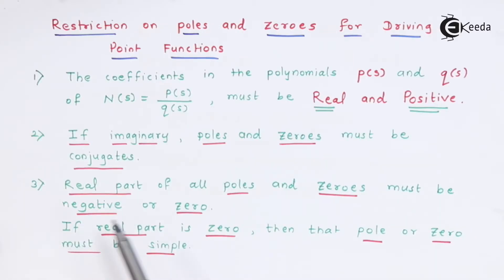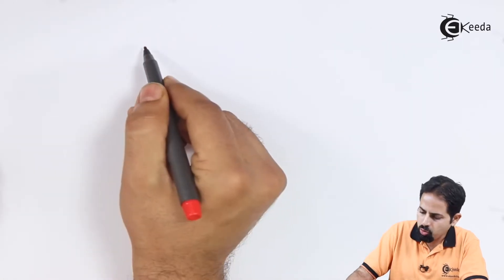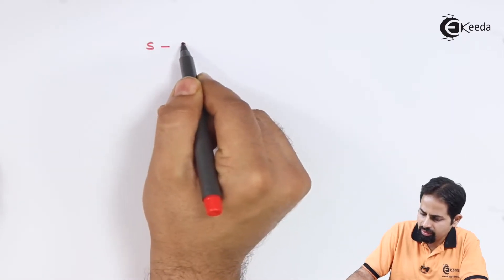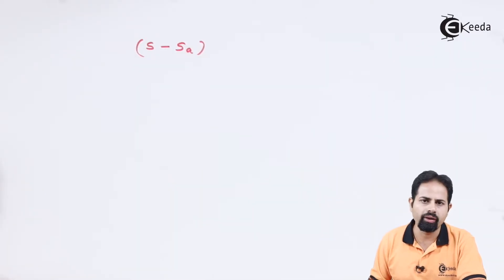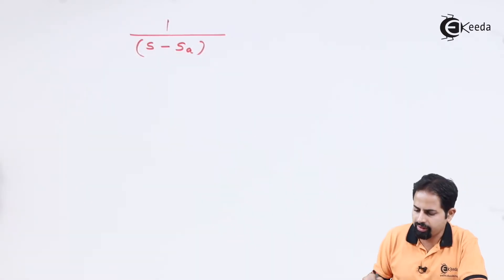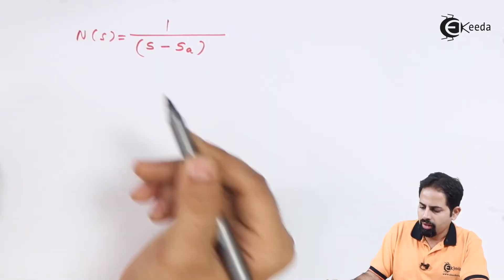Now the third condition is the real part of all poles and zeros must be either negative or zero. If real part is zero, then that pole or zero must be simple. We will see this in brief. So what do you mean by the real part of pole or zero? So we will take an example. Suppose for any function in denominator, you have something like S minus SA. Suppose this factor is there in denominator like this.